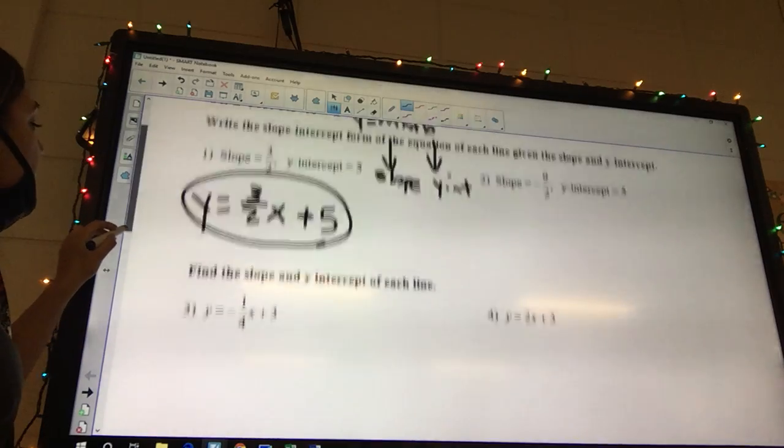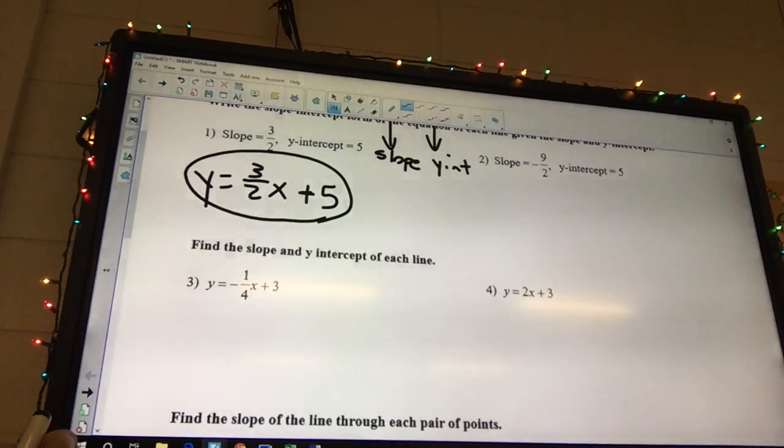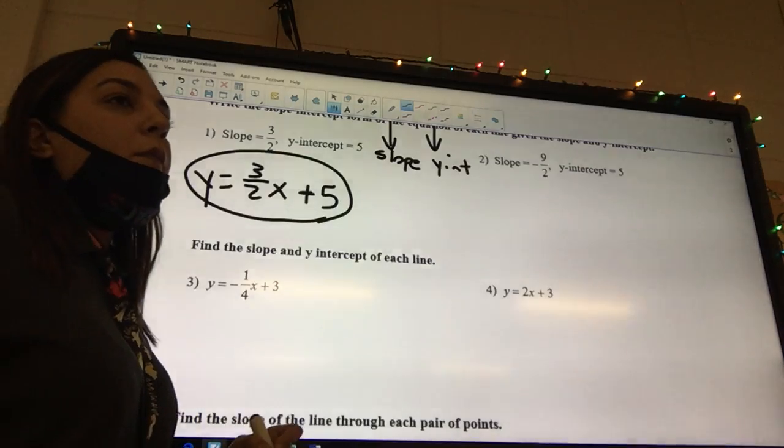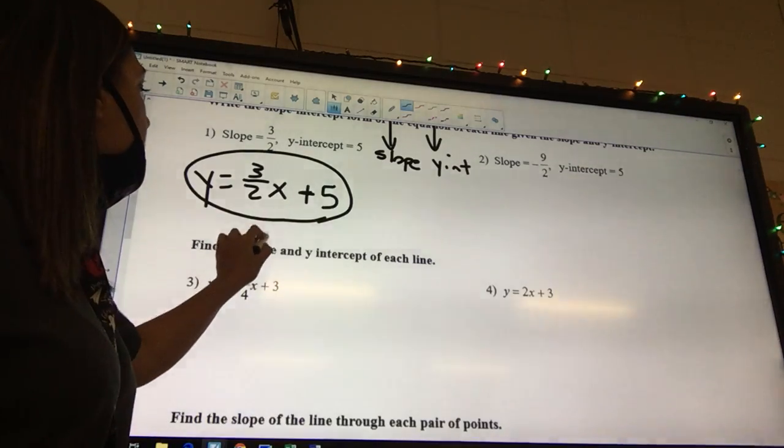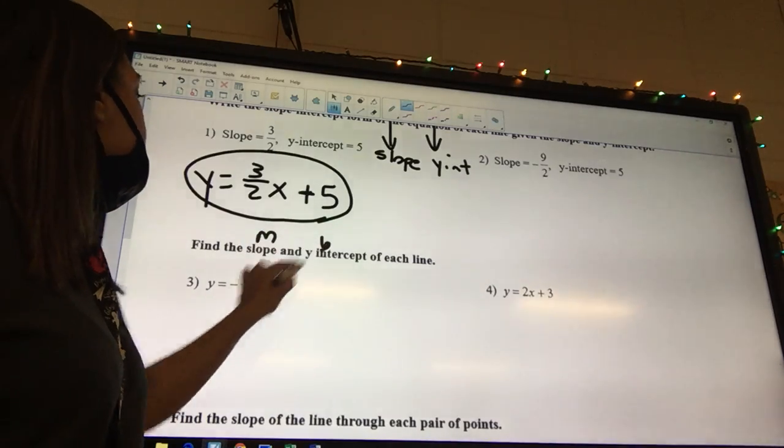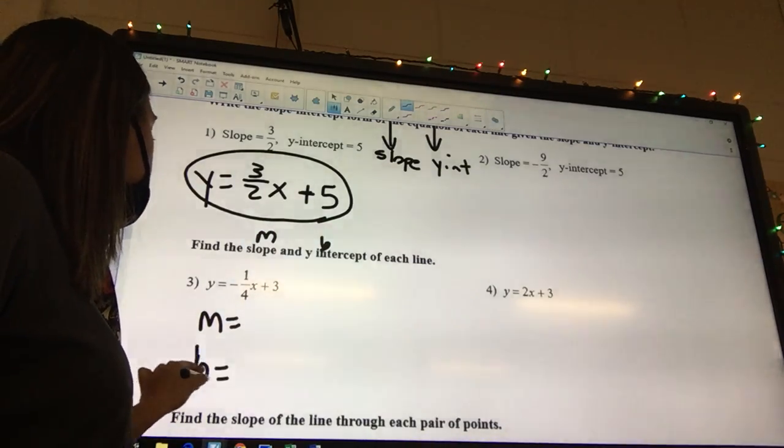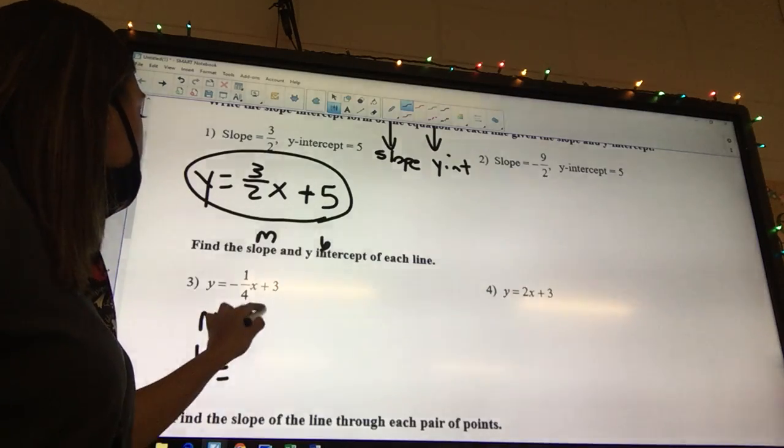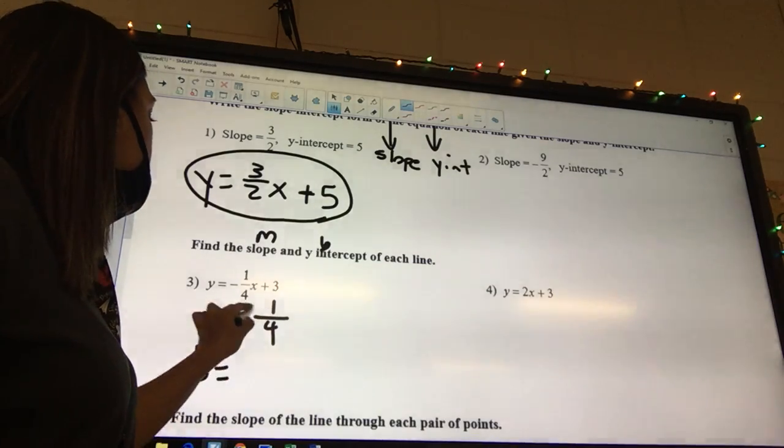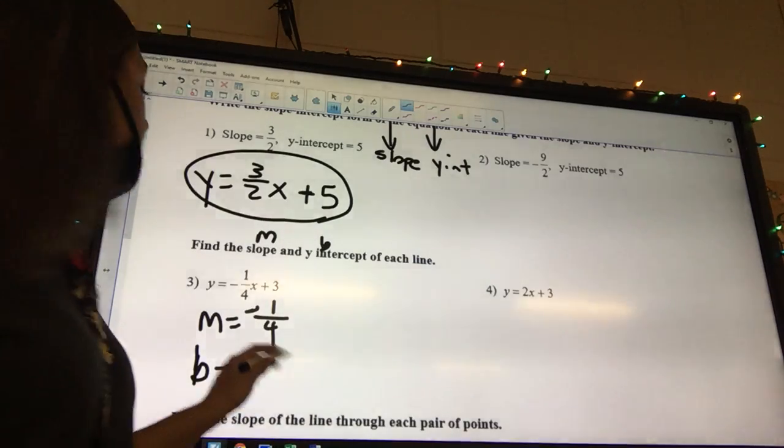Okay, number 3 says find the slope and the y-intercept. What letter do we use for slope? M. M. What about the y-intercept? What letter do we use? B. B. So you're going to say m equals, b equals. What does our m equal? Negative 1 over 4. Negative 1 over 4. What about our b? 3. It's just 3.